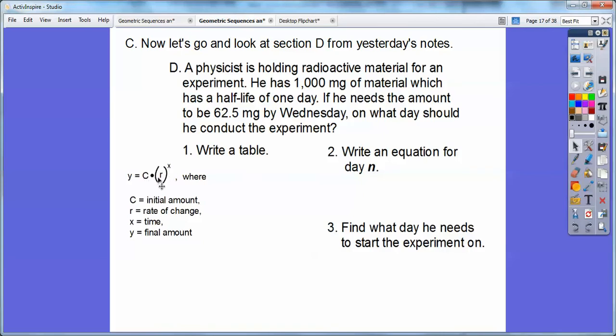So it's going to be 1,000, 1 half to the N power. Easy enough right there. And then it says if he needs the amount to be 62.5 milligrams, that's the end right there. Well, which one's the end right there? The final amount is this Y right here. So if I put in 62.5 right there, then I have this equation right here. Notice I put in 62.5 for Y.